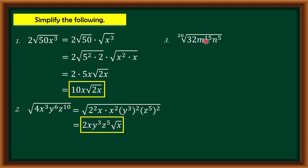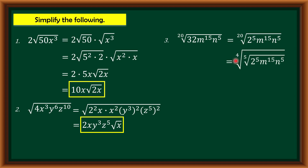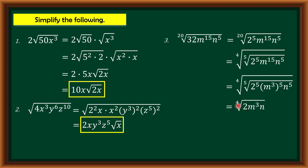Let us have the third example: the 20th root of 32 times m raised to 15 times n raised to 5. We rewrite 32 as 2 raised to 5 in exponential form. Now all exponents equal 5, so we reduce the index using the last law. This gives us the fourth root of the fifth root of 2 raised to 5 times m raised to 15 times n raised to 5. We simplify m raised to 15 as m cubed raised to 5. Since all exponents equal 5, our final answer is the fourth root of 2 times m cubed times n.